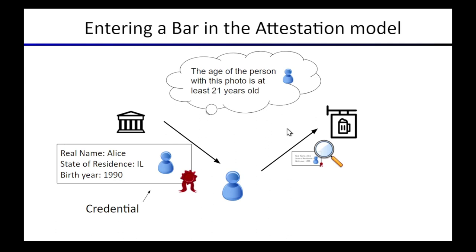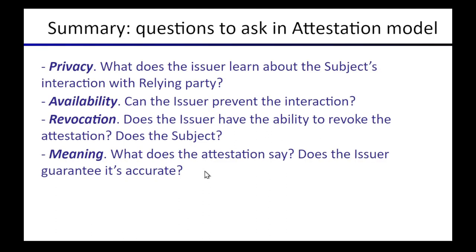We're going to look at a couple of more high-tech alternatives in a moment. But first, let's recap and discuss some questions we can ask about any attestation model protocol. First, we look at privacy: what does the issuer learn about the interactions between the subject and the relying party? We also care about availability: is the issuer needed to sign off on this interaction? We'll also look at revocation: does the issuer have the ability to cancel the ID card, or does the subject even have the ability to cancel it? Finally, we'll look at the meaning of the attestation — does it carry more information like the subject's address, real name, prior names, or transaction history — and is the issuer guaranteeing anything about this? These are all issues by which the schemes we'll look at will differ.